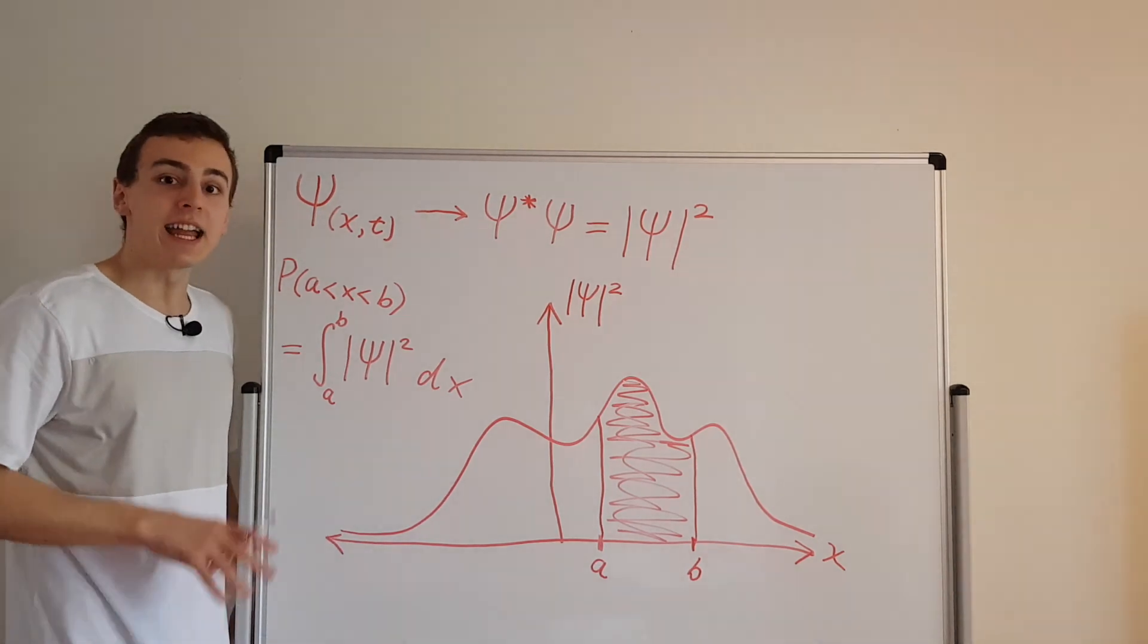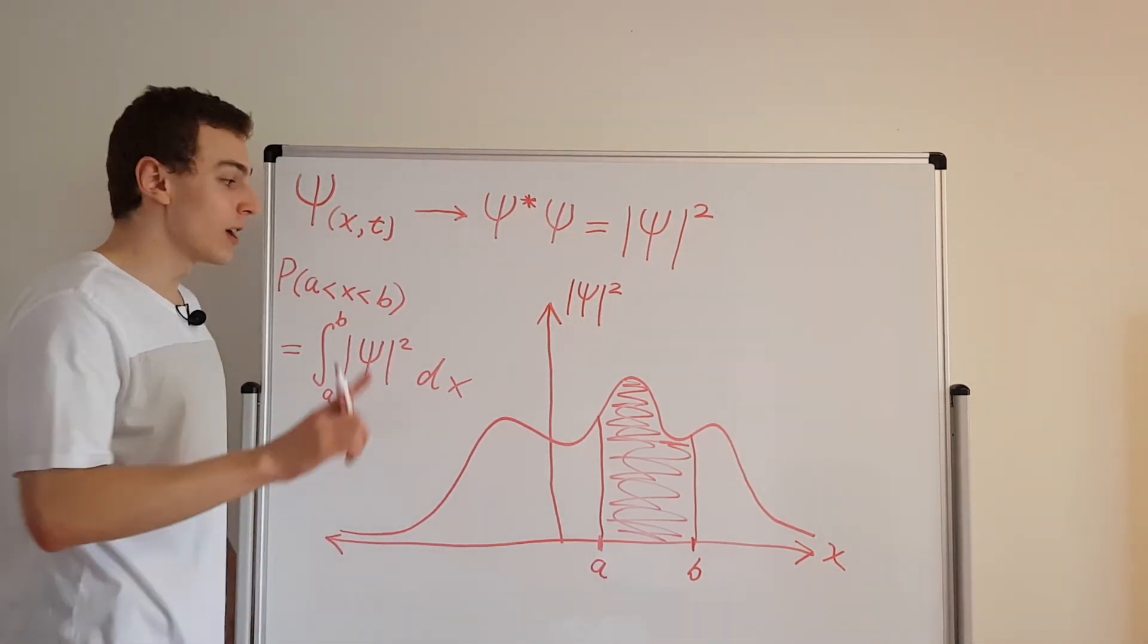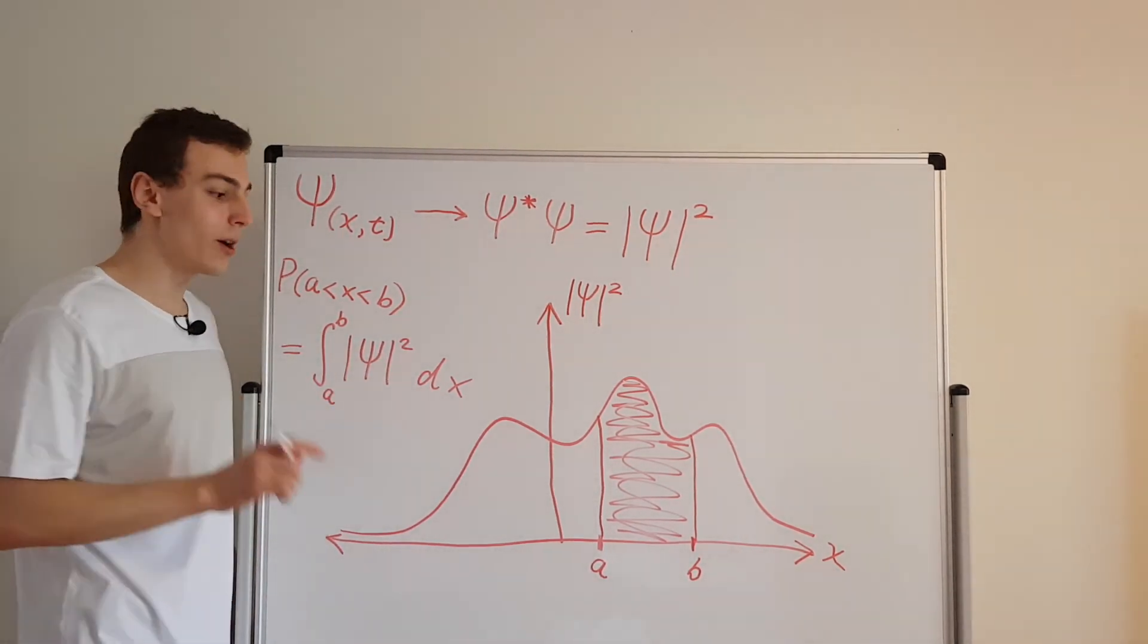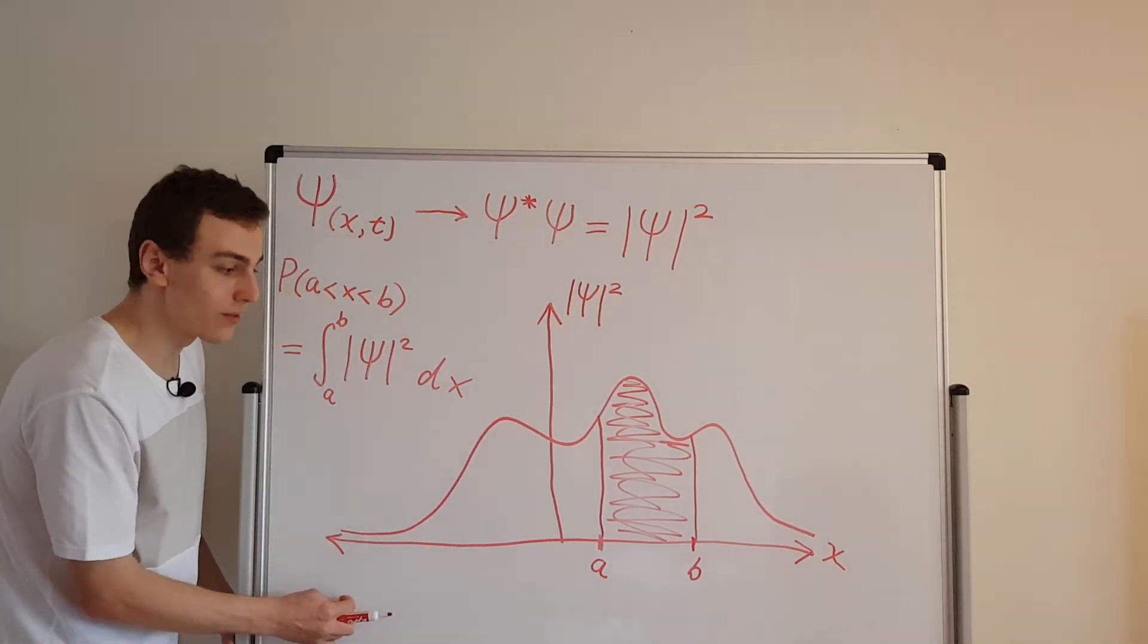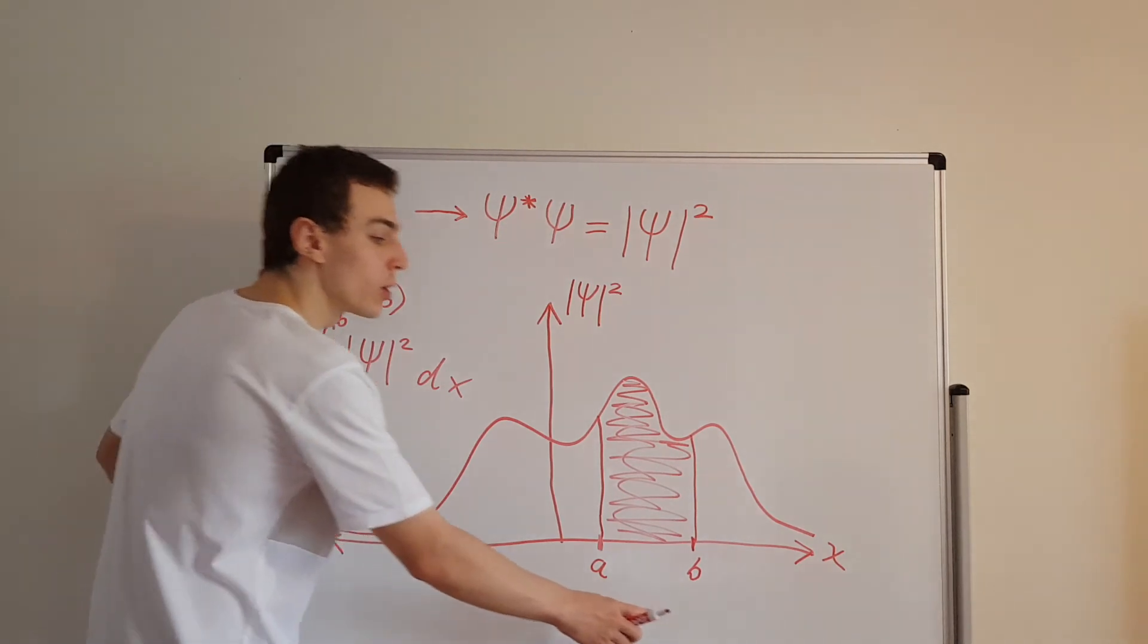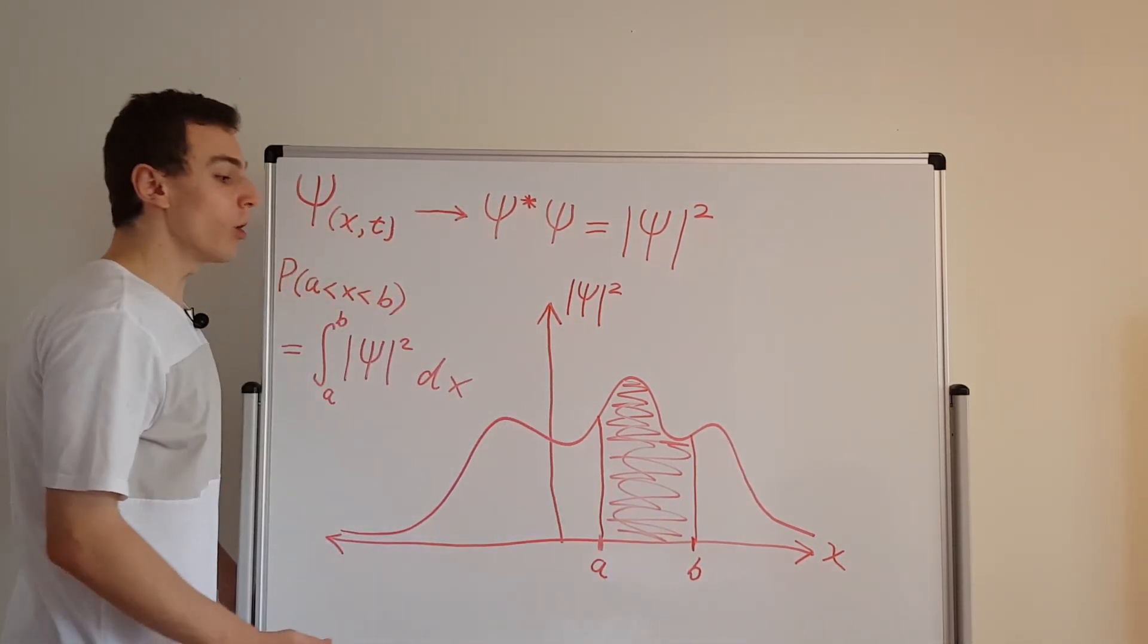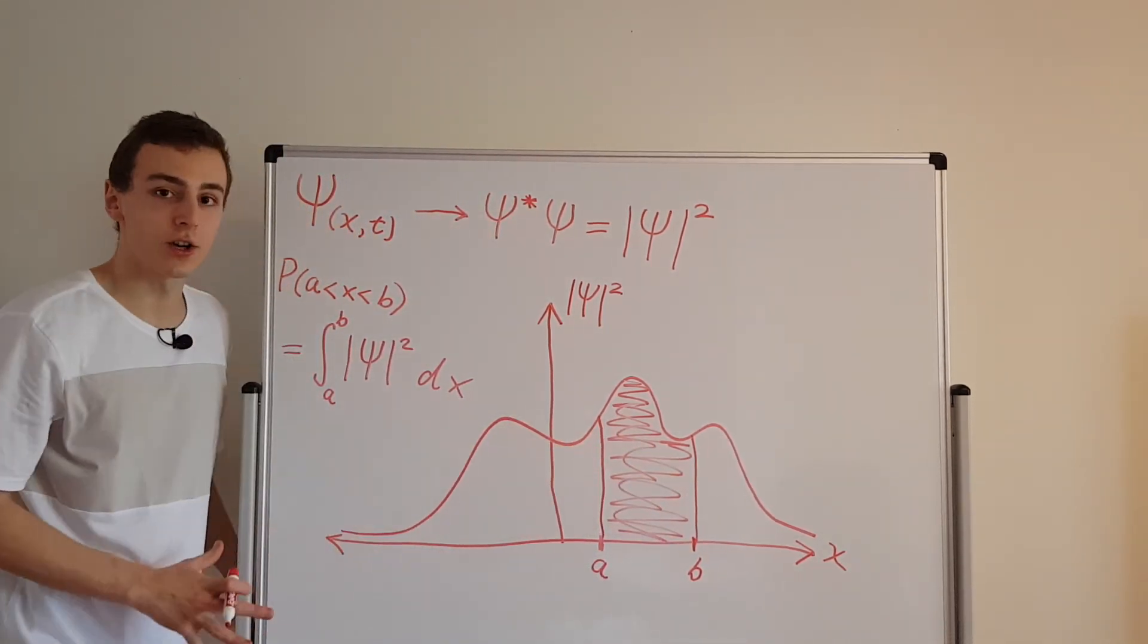So think about that, and we'll come back to that idea in the next video. So this is your homework. Think about what would happen if we moved this a value all the way towards negative infinity, and this b value all the way towards positive infinity. What would happen to the area under this curve?